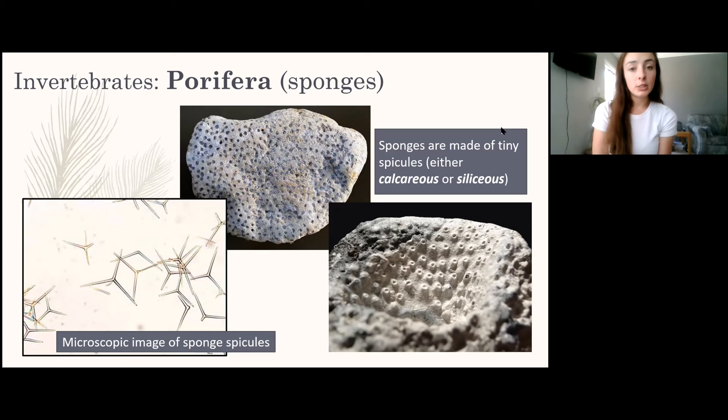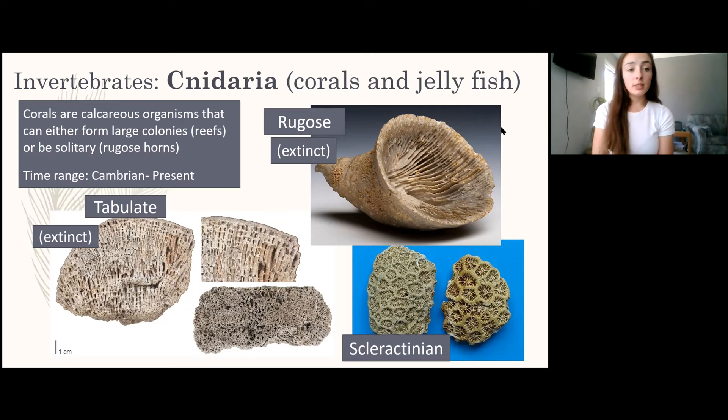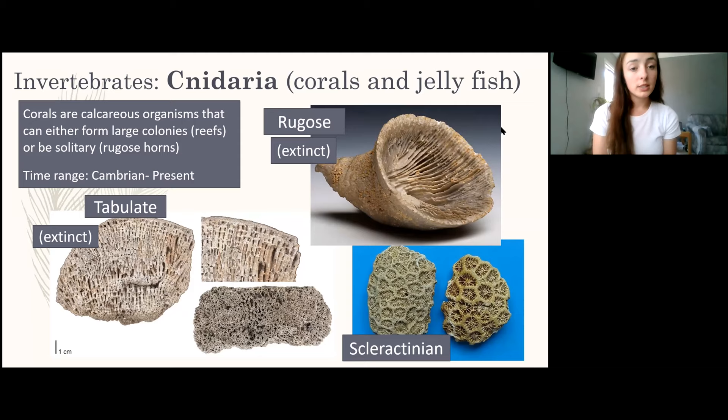The next phylum is Cnidaria, which includes corals and jellyfish. Since jellyfish lack hard parts and don't preserve well, we focus on corals. Corals are calcareous and can form large colonies called reefs or be solitary, like rugose horn corals. Rugose corals and tabulate corals — the one that looks like a bunch of straws — are both extinct. The only coral group still living is the scleractinians.